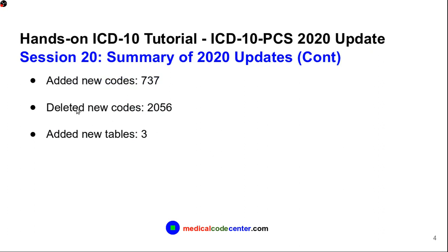So overall, in the 2020 ICD-10 PCS codes, we added 737 new codes but deleted around 2,056 old PCS codes, resulting in a net reduction of about 1,322 codes. We also added 3 new PCS tables.